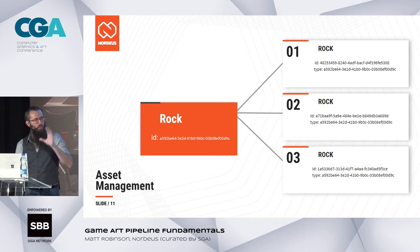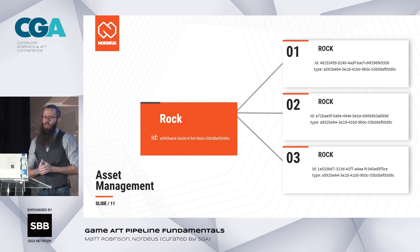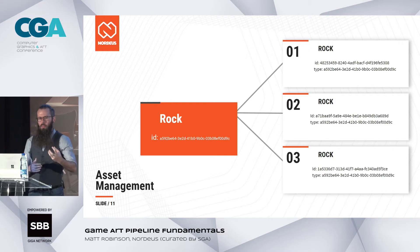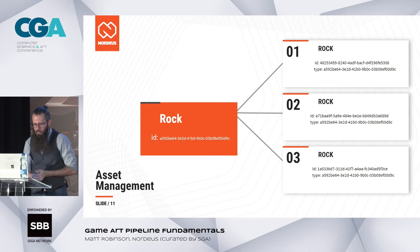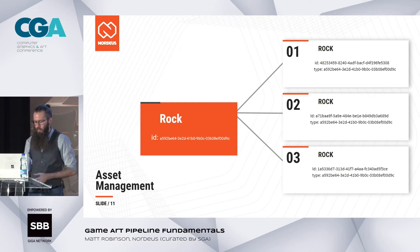Let's pretend we have a game — a rock collection game. We need to make a bunch of rocks. We've got our rock asset type with an ID, and then we've got three different rocks. Unfortunately, everything is named 'rock' at this point. So what can we do about that?